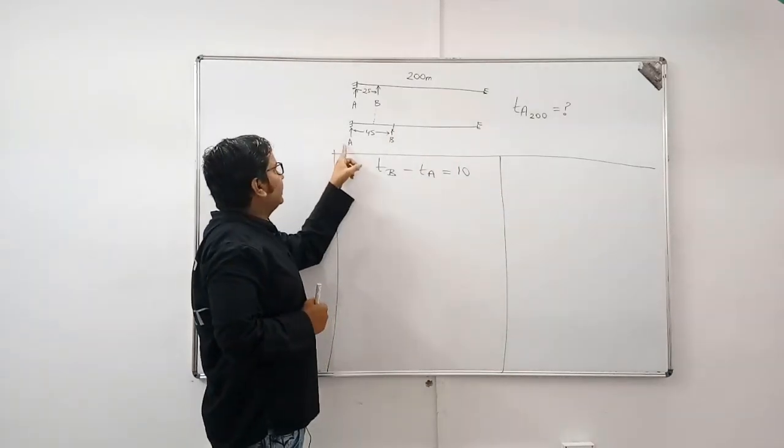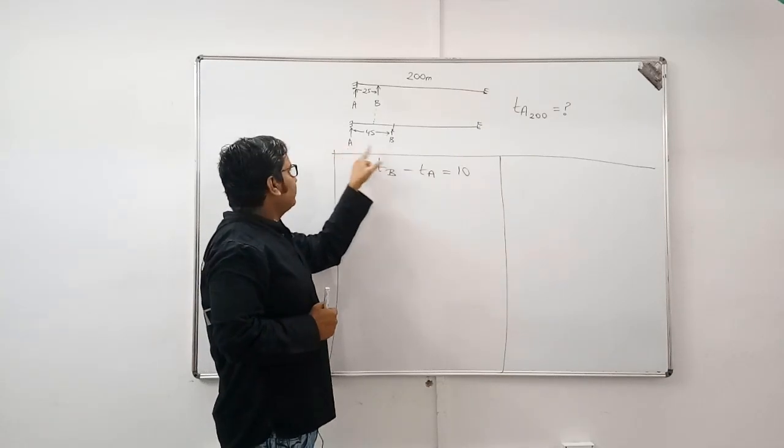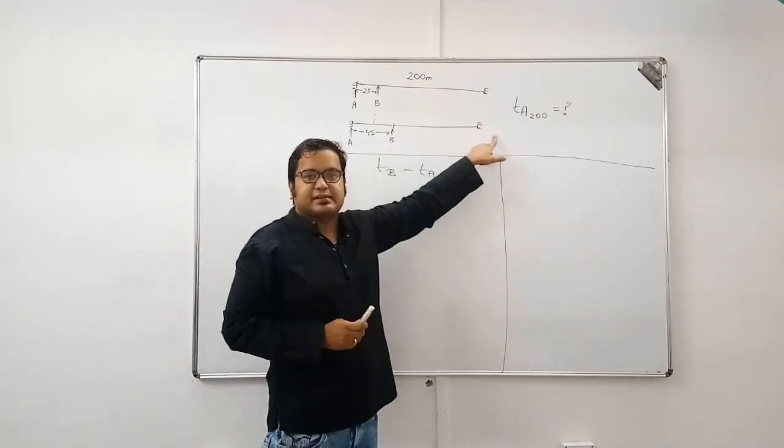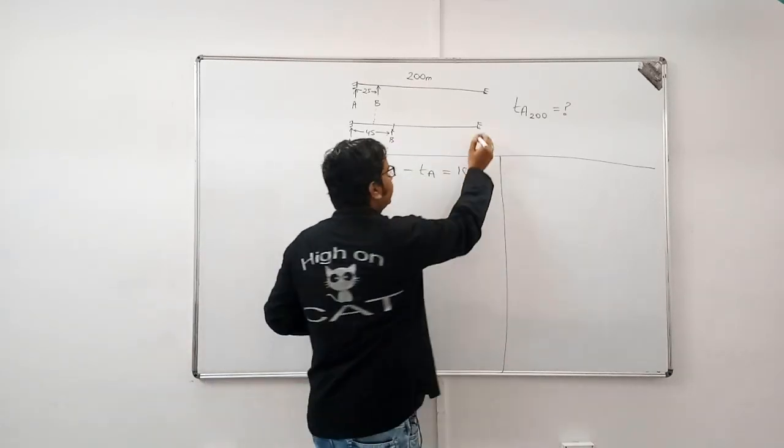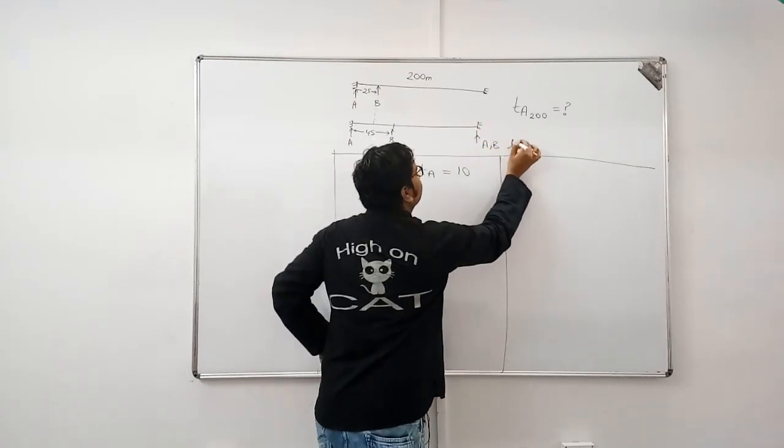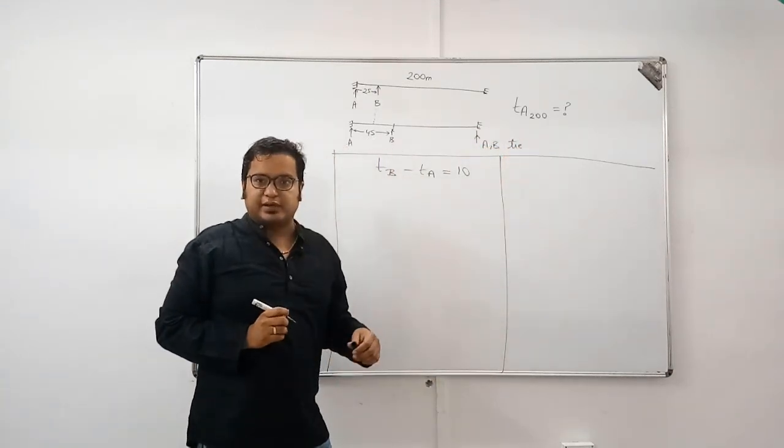In the second case, if B starts 45 meters ahead of A, the race ends in a dead heat. That means, both reach together. A and B, they reach together.